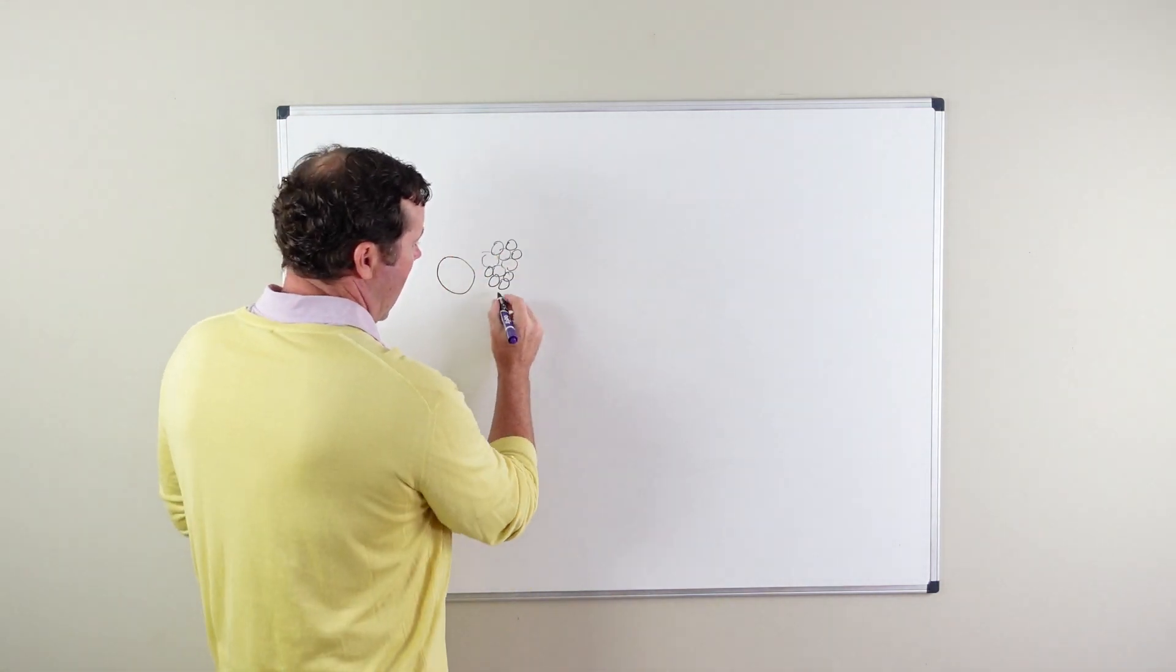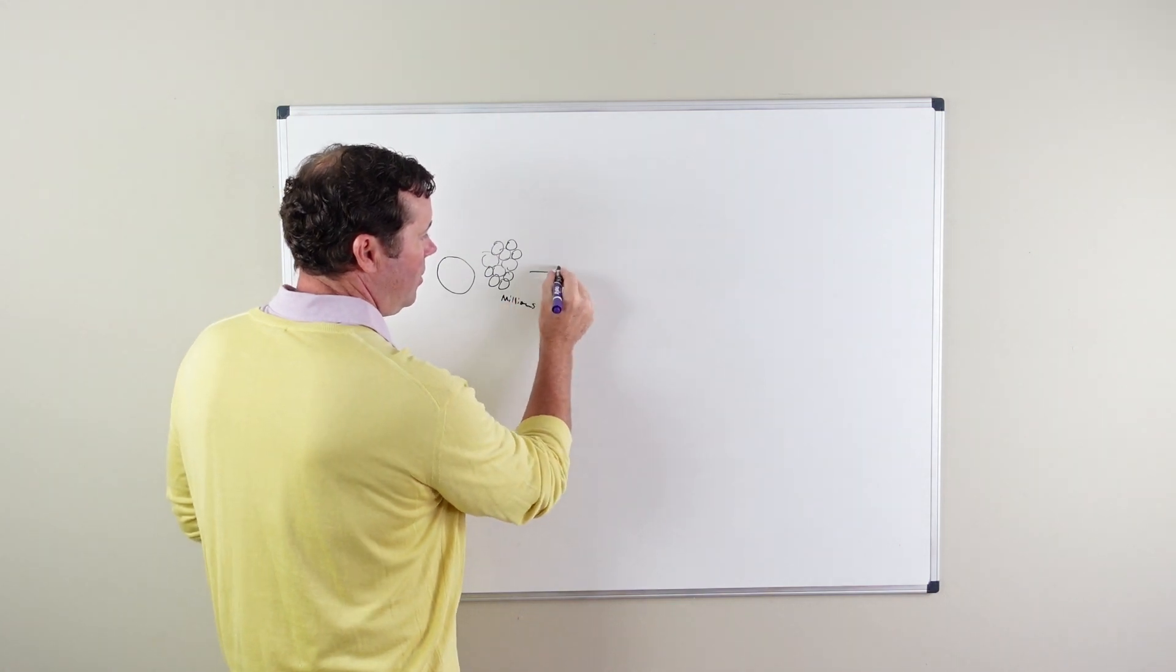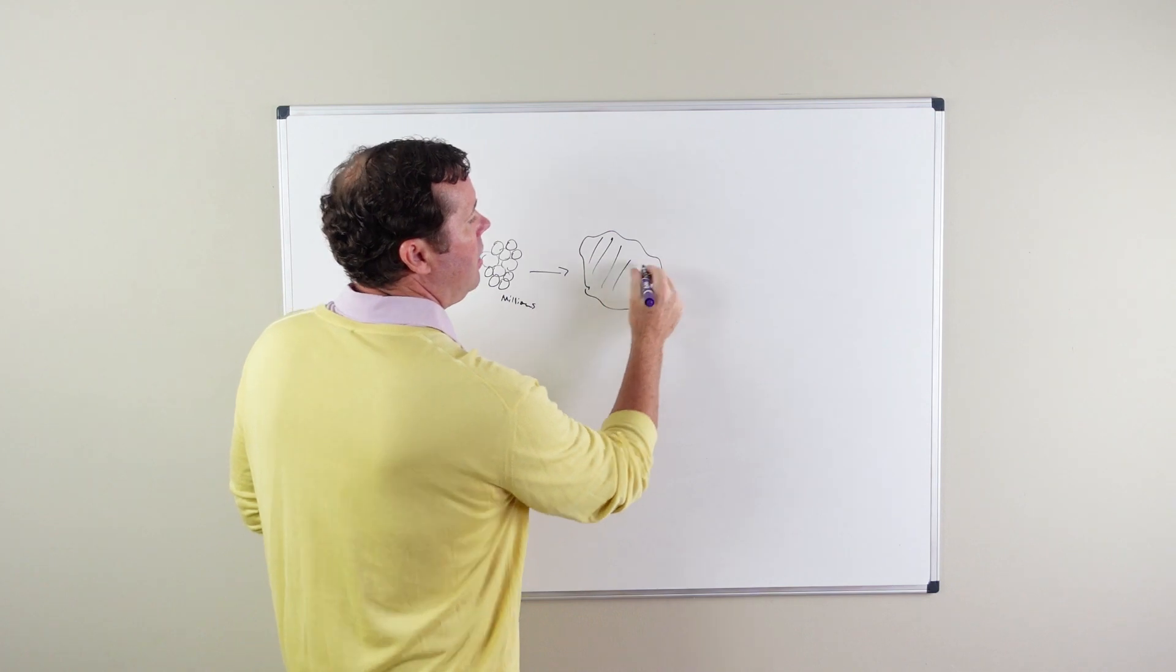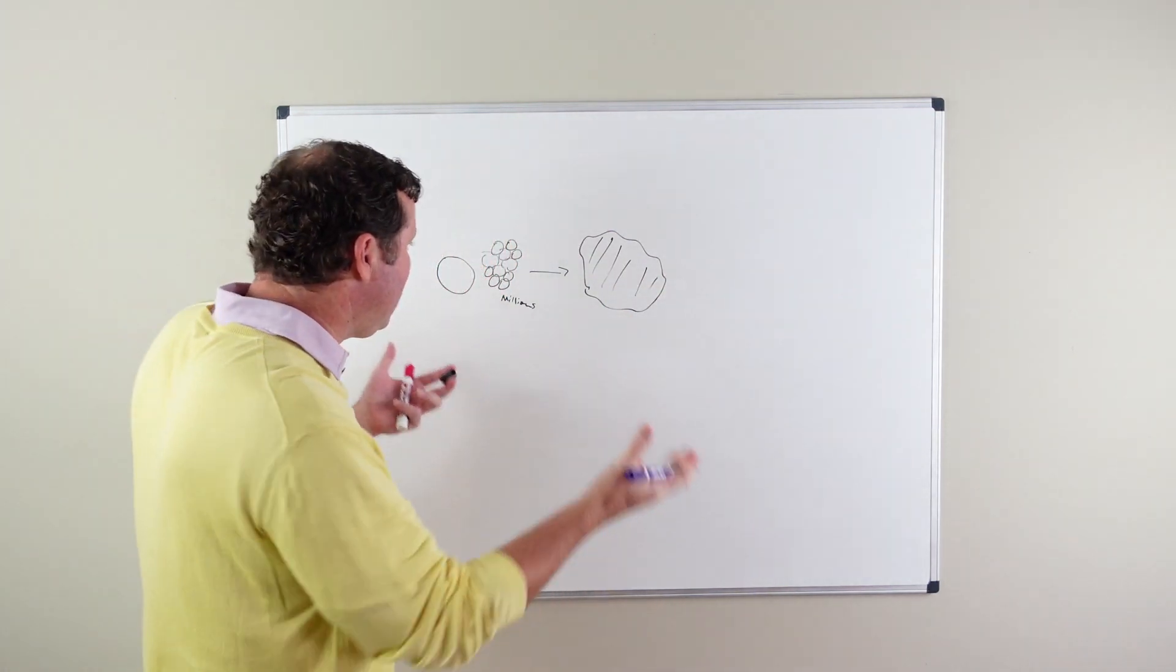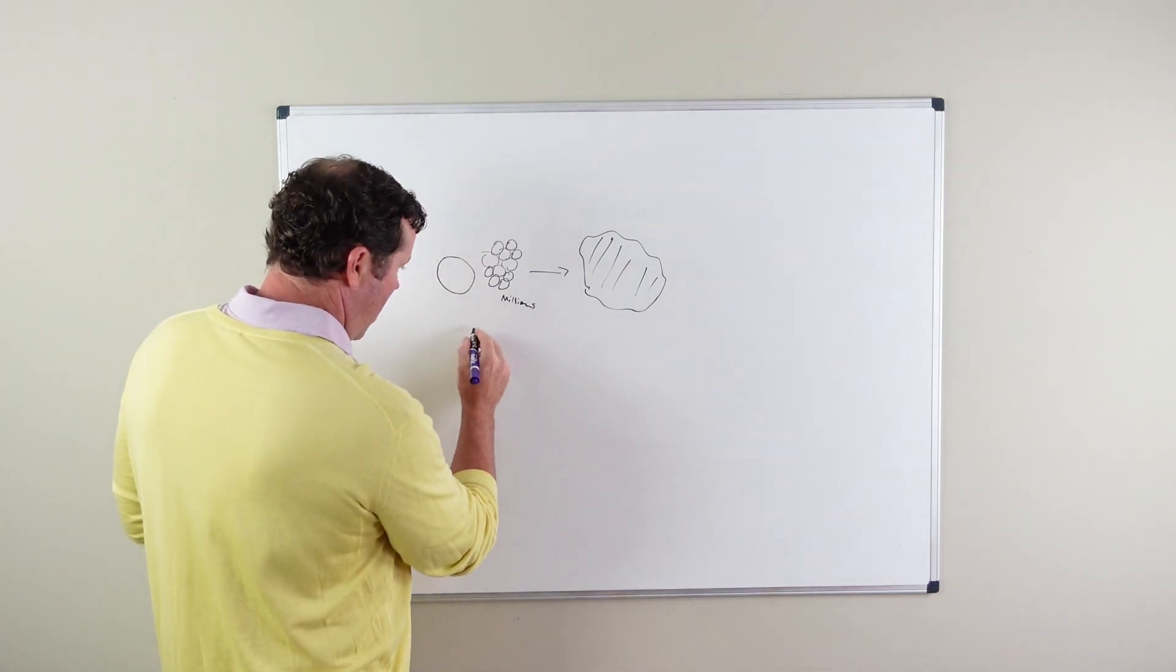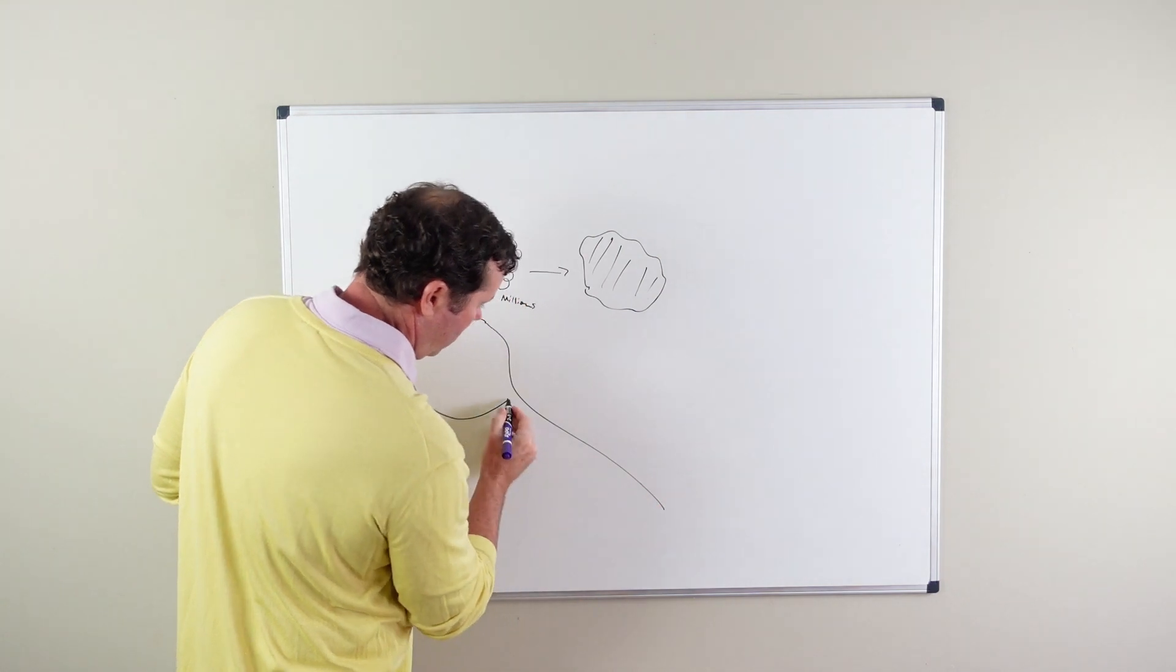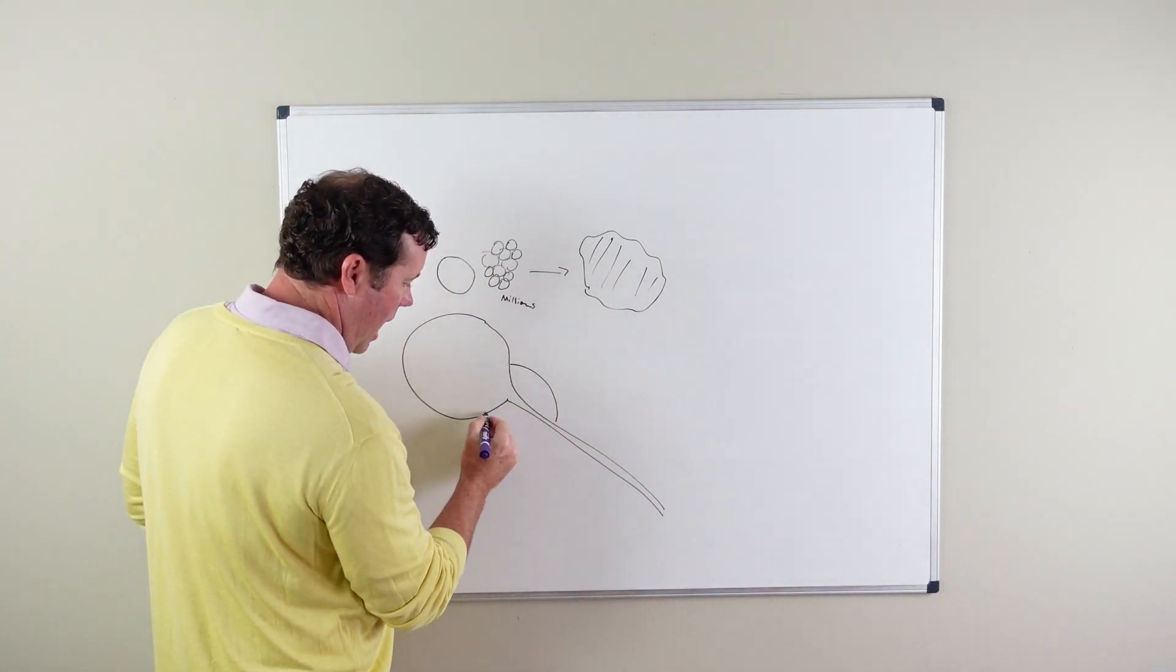Millions of these cells will then become some type of solid tumor. With prostate cancer, here is the bladder, that's the urethra, and the prostate sits at the neck of the bladder here.